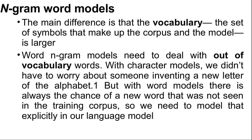We now learn n-gram models over words rather than characters. All the same mechanisms apply equally to word and character models. The main difference is that the vocabulary — the set of symbols that make up the corpus and model — is larger. There are only about 100 characters in most languages, and sometimes character models are even more restrictive, such as treating capital A and lowercase a as the same symbol, or treating all punctuations as the same symbol.